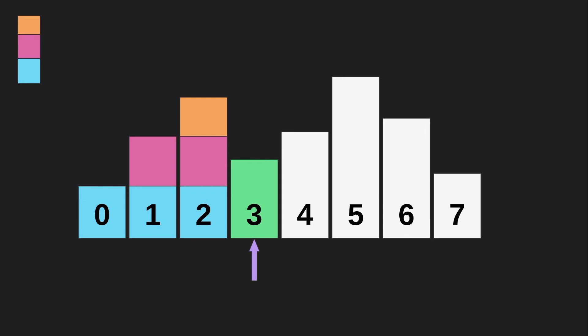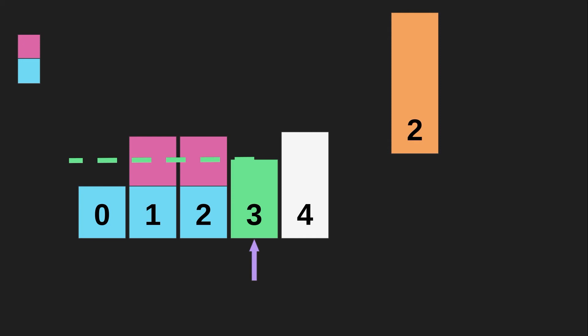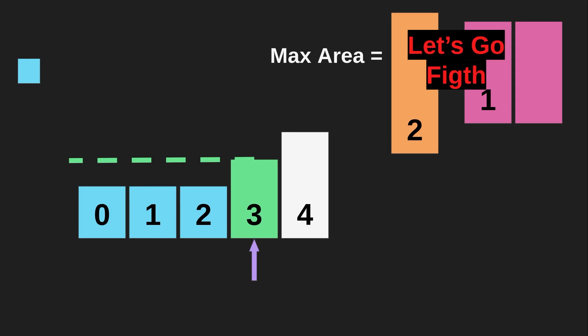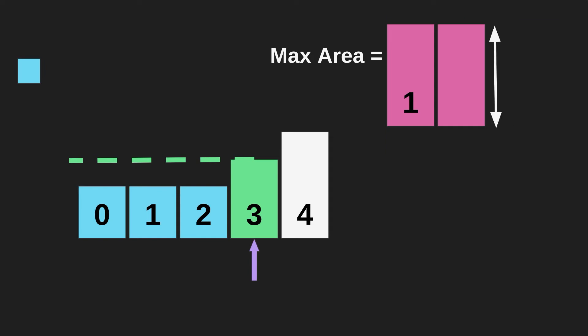Because bar three is smaller than what's on top of the stack, we need to remove what's on top — the orange rectangle. Let's compute that area and call it the maximum for now. Bar three is still smaller than what's now on top, so we remove it too, compute that area, and check which one has the maximum — let's say it's the pink one. But how do we compute the area? We know the height, and we need to store the starting position. With the current position minus the starting position times the height, we can compute the area.